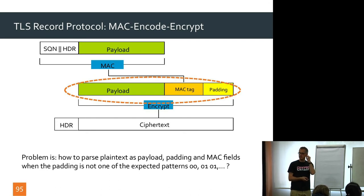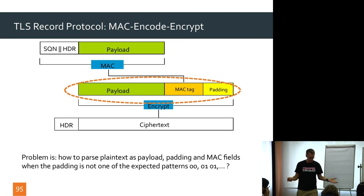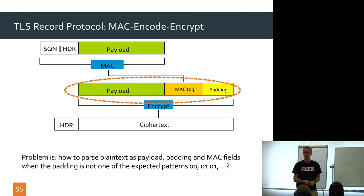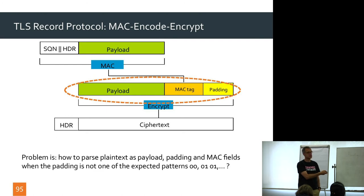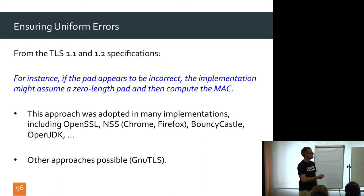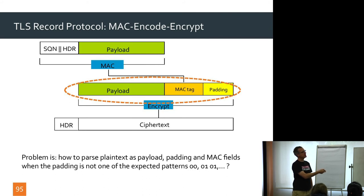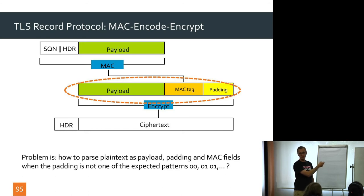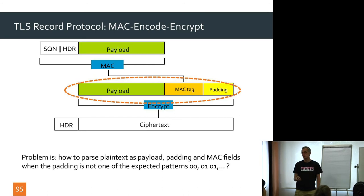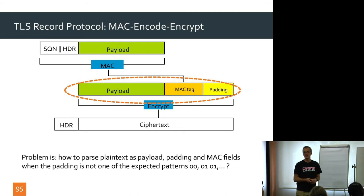The spec gives advice: if the padding appears incorrect, the implementation might assume a zero-length pad and then compute the MAC. So if padding isn't correctly formatted, you pretend there's no padding — put a dividing line, assume the next 20 bytes are the MAC tag, and everything else is payload and header. You have to check the MAC on something. This is pretty much what everybody did — OpenSSL, NSS (used in Chrome and Firefox), Bouncy Castle, OpenJDK.